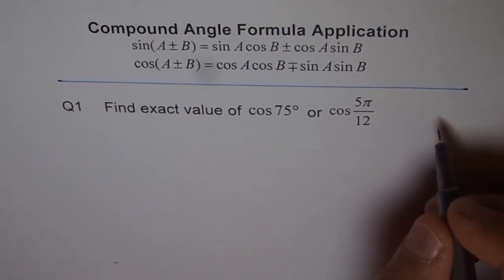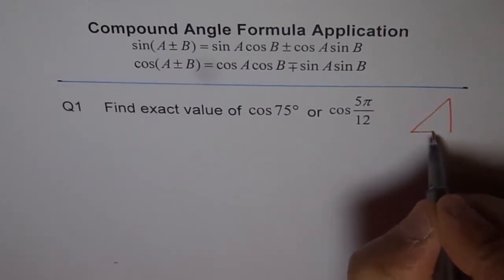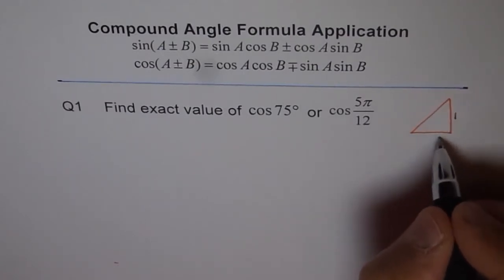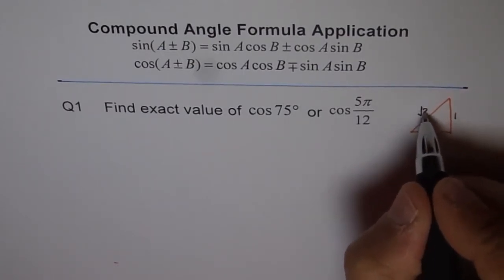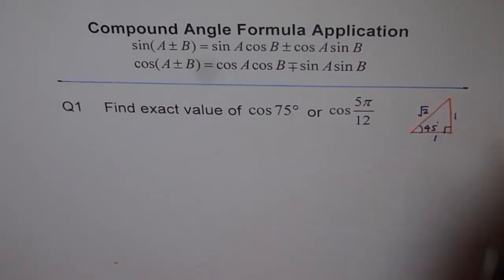So, let me make these triangles for you here. So, this is the 45 degree one first which I am drawing. And in a 45 degree special triangle, these sides are 1 and 1 and the hypotenuse is √2. And this is 45 degrees and that is 90 degrees.